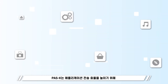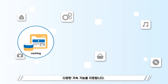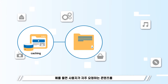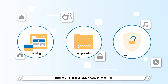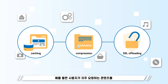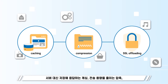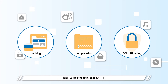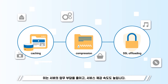PASK supports various acceleration functions to increase application transfer efficiency. For example, a caching feature that stores and responds to frequent content requests, a compression feature that reduces traffic capacity, and SSL encryption and decryption that secures service traffic.